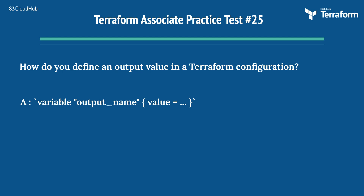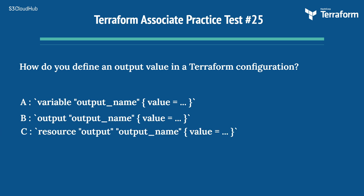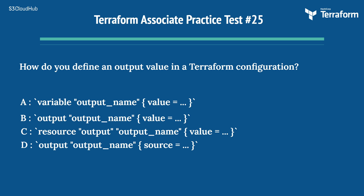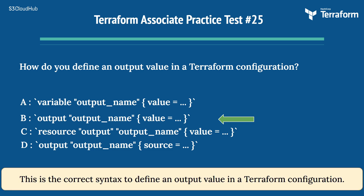The twenty-fifth question: how do you define an output value in a Terraform configuration? Options are: A) variable output_name value = ..., B) output output_name { value = ... }, C) resource output output_name { value = ... }, D) output output_name source = ... The right answer is Option B, output output_name { value = ... }. This is the correct syntax to define an output value in a Terraform configuration.